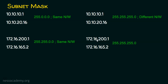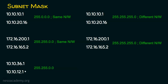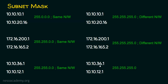What about 172.16.200.1 and 172.16.165.2 with a class C subnet mask? If it is the class B subnet mask, communication is possible with a switch because they belong to the same network. But if it is the class C subnet mask, three octets must match. The third octet is not matching here, so they belong to different networks and a switch cannot make communication between these two devices. Similarly, for 10.10.36.1 and 10.10.12.1 with a class C subnet mask, they belong to different networks since the third octet differs.